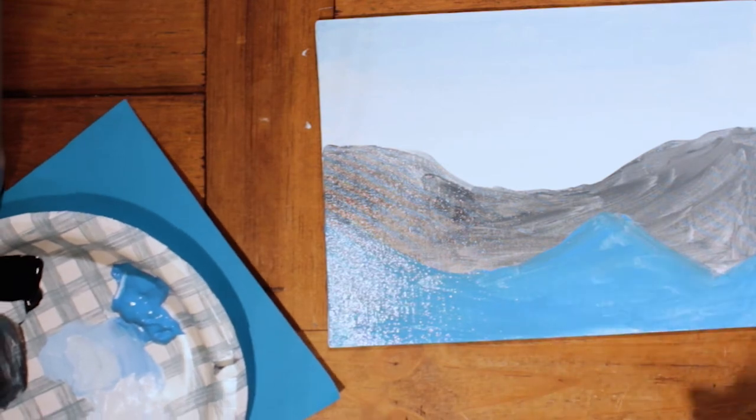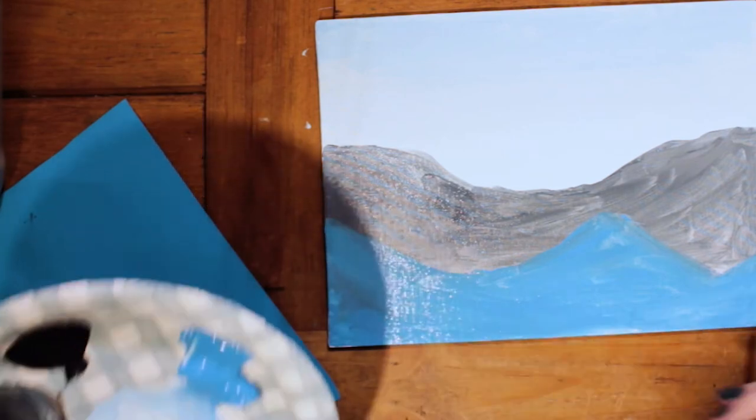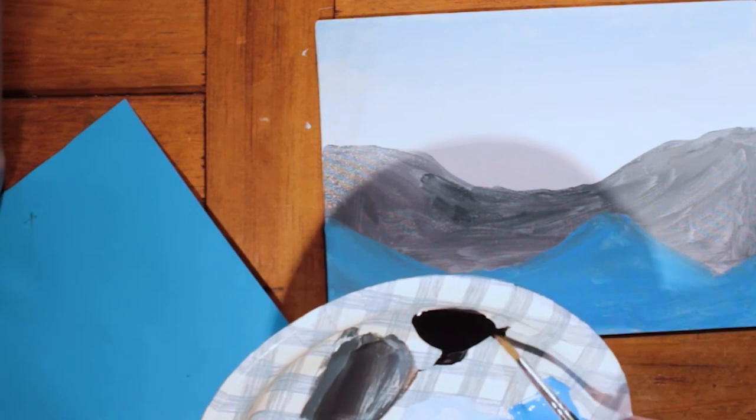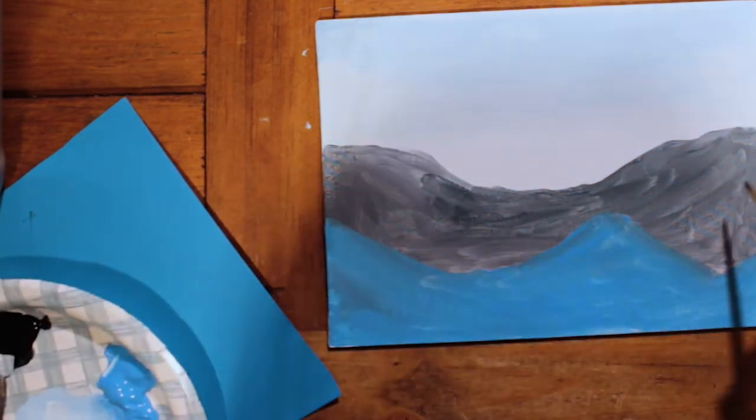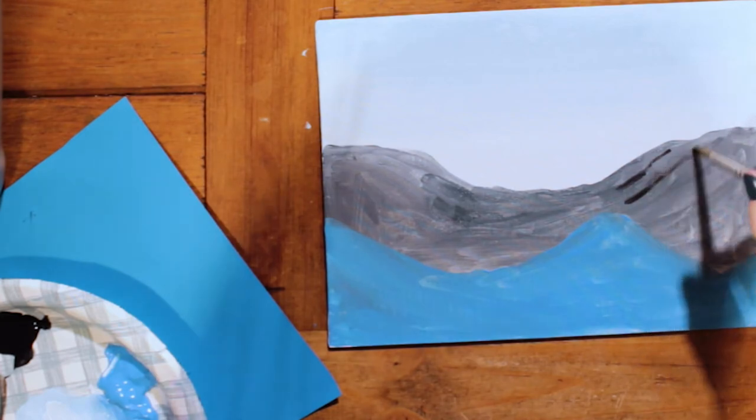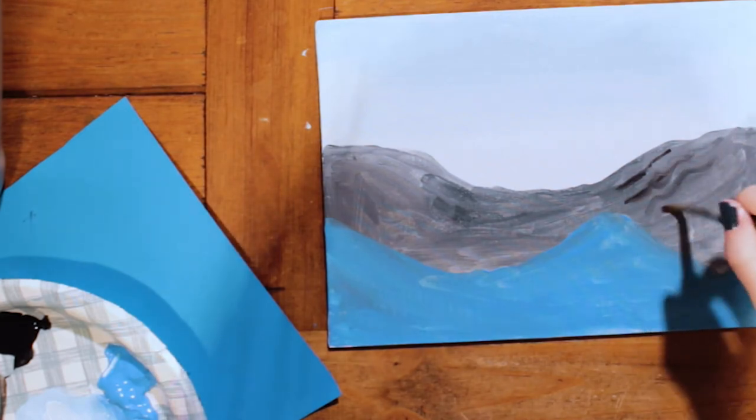So you can start with the back mountain range. I'm going to take some black to add some more texture. And just on one side of the mountain I'm just going to want to add some lines. Just the exact part of this light.